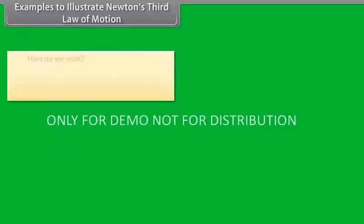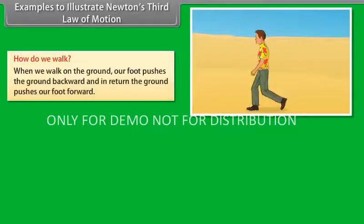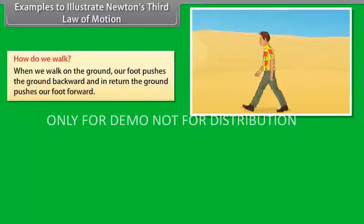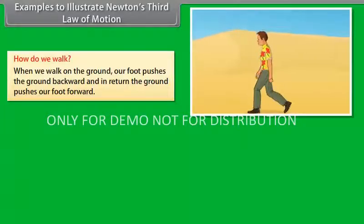Newton's third law of motion: How do we walk? When we walk on the ground, our foot pushes the ground backward and in return the ground pushes our foot forward.